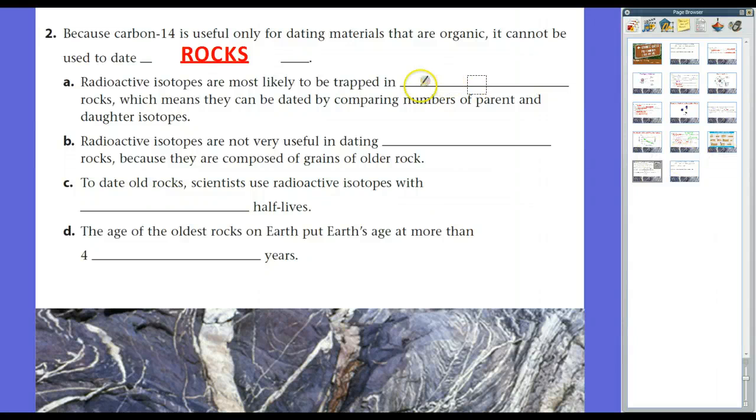So, we have to use other things. For example, radioactive isotopes are most likely to be trapped in igneous rocks for various reasons, which we don't really need to go into. But essentially, igneous rocks can be dated by comparing numbers of parent and daughter isotopes. So we use igneous rocks, and we use different dating techniques, and there's like seven or eight different dating techniques to determine the absolute age of rocks. But we're going to look at one right here. Radioactive isotopes are not useful in dating sedimentary rocks, mainly because sedimentary rocks are made of older rocks.